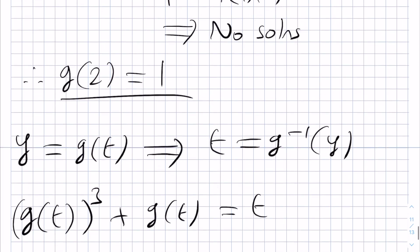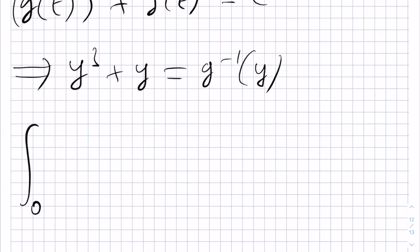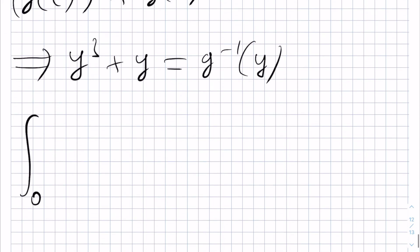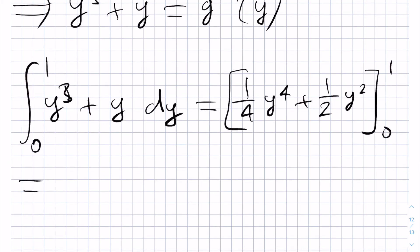We have the integral from 0 up to g(2). Well, g(2) is 1. And then we have y cubed plus y. This is quite easy to integrate. And in particular, we will get a quarter y to the 4 plus a half y squared between 0 and 1. And this gives us a quarter plus a half, which is 3 quarters.